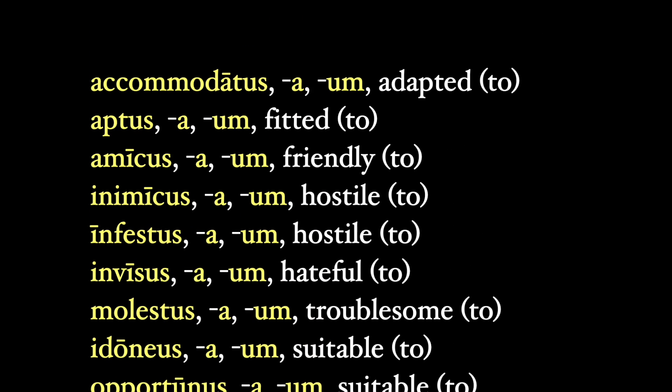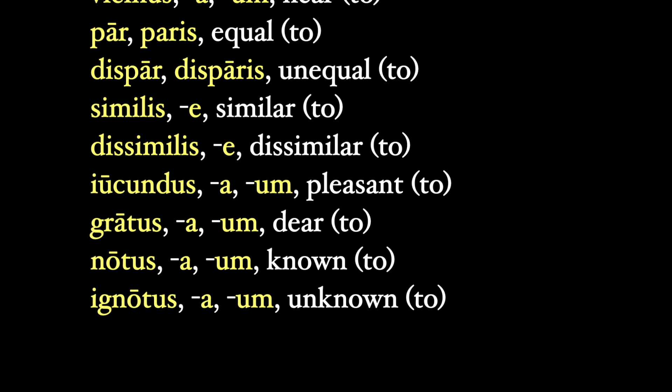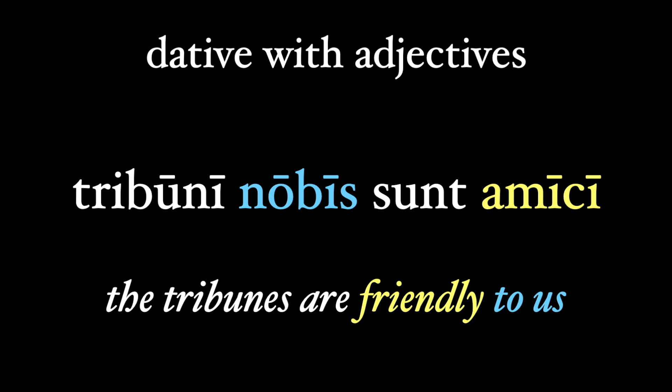So rewinding through this list, it's pretty easy to see that the dative arises naturally from these words with their meanings: friendly to, useful to, similar to, or even known to. Let's see some of these in action. The dative will be sky blue. Tribuni nobis sunt amici — the tribunes are friendly to us. Note that here the word amici is an adjective, not a noun.